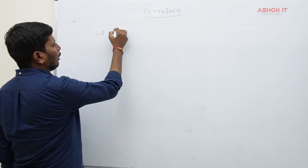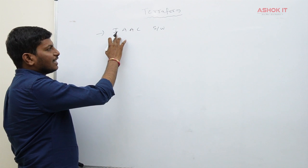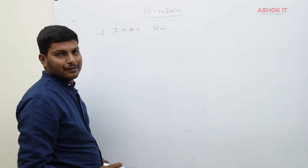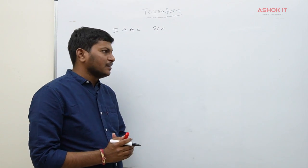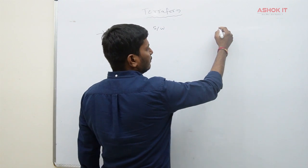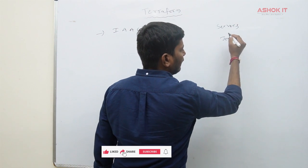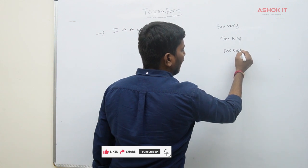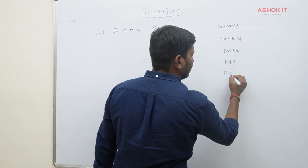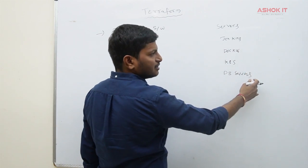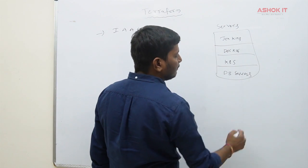What is Terraform? We can call Terraform as IAAC software — Infrastructure as a Code software. Terraform is used to create infrastructure which is required for our application. What is infrastructure? Whenever we are developing a project, we need some servers like a Jenkins server, a Docker machine, Kubernetes cluster, and DB servers.